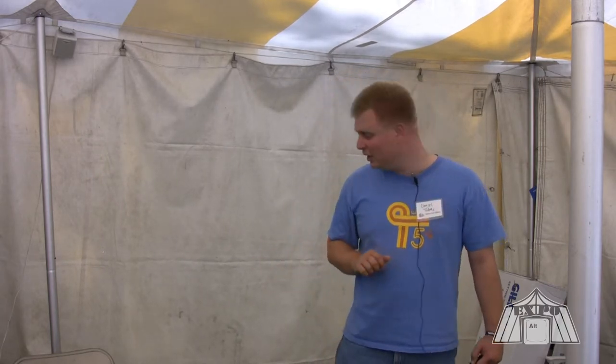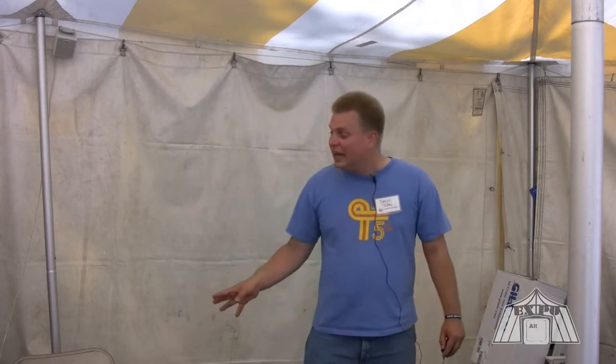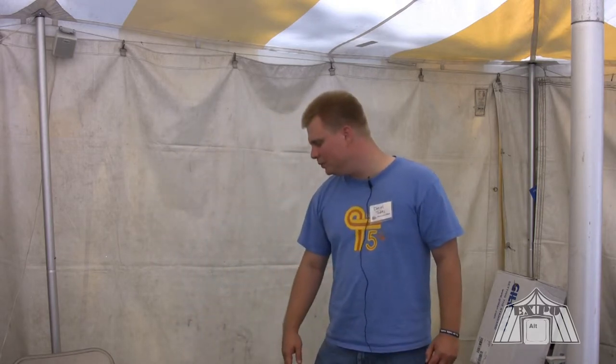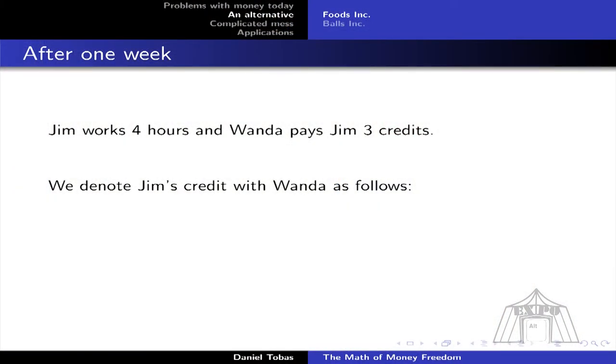Maybe Jim works more hours and gets paid Federal Reserve notes for the other hours, just because you need some money in the rest of the economy — he might want to buy other things besides food. This is a great type of situation because it continues weekly as time progresses. On the slides, there's a diagram illustrating when Wanda pays Jim: after one week, Foods Inc. pays Jim three credits, shown as an arrow from Foods Inc. to Jim with the number three, representing that Foods Inc. owes Jim three credits.